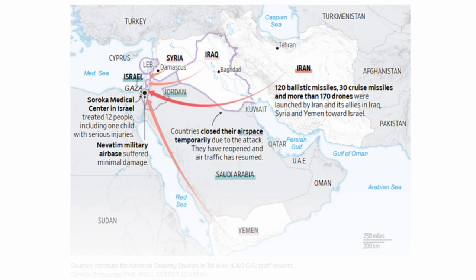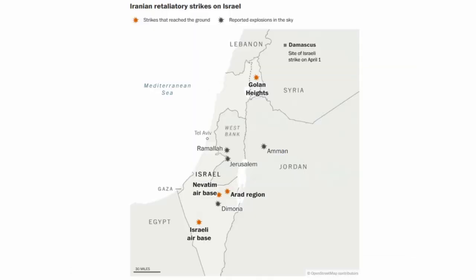Iran said that the whole attack included 170 drones, more than 30 cruise missiles, and more than 120 ballistic missiles. Israel said that 90% of the incoming missiles were intercepted. The United States, the UK, France, and Jordan were also involved in shooting down the missiles and drones.